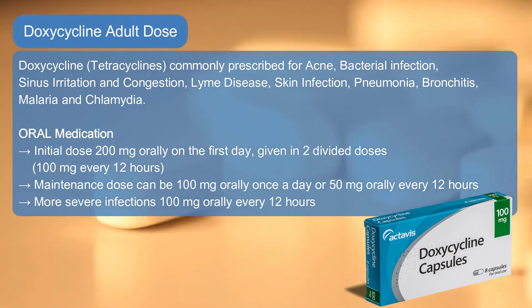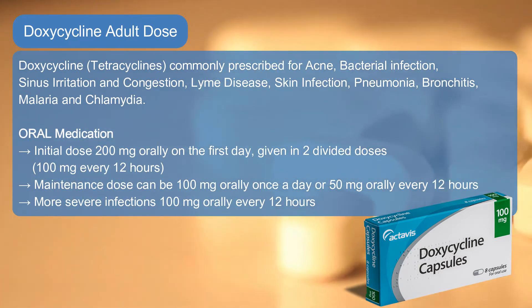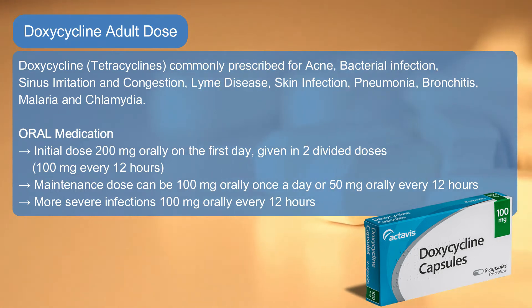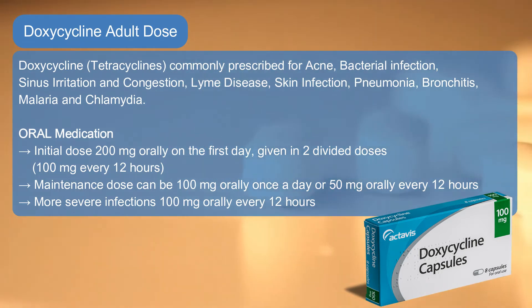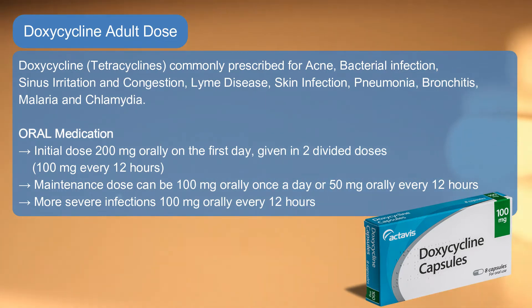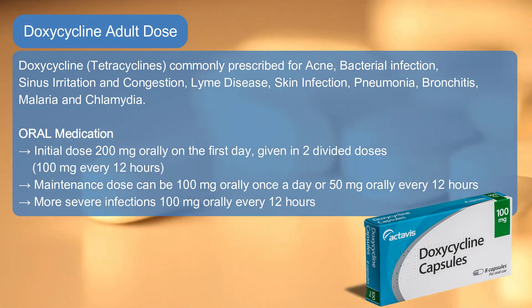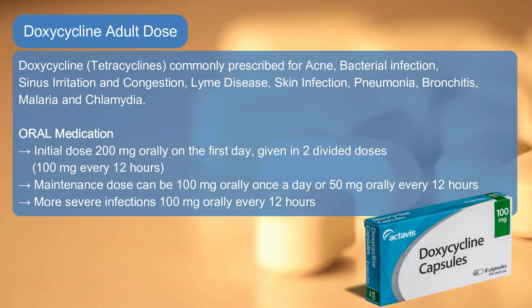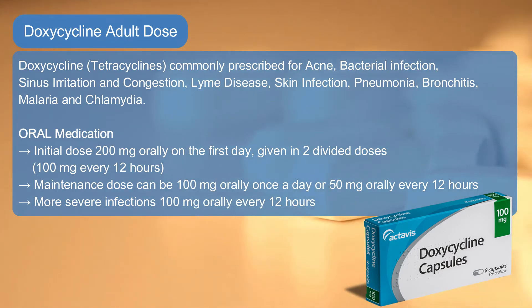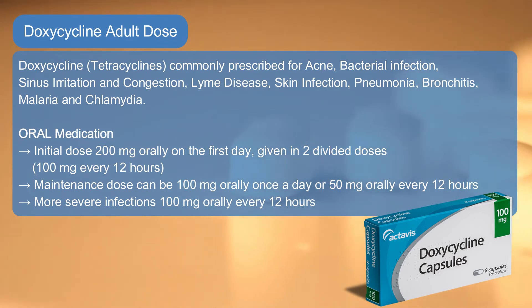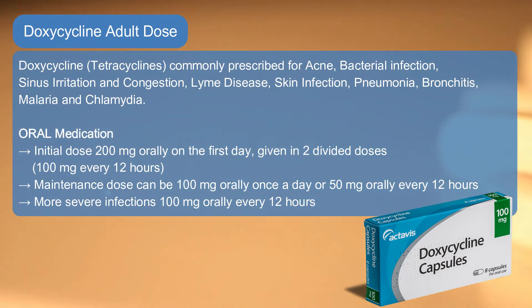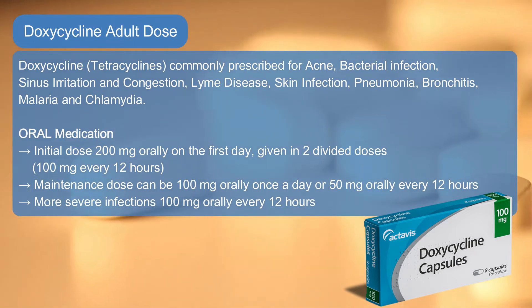Common Doxycycline adult dose — Oral medication: Initial dose 200 mg orally on the first day, given in 2 divided doses of 100 mg every 12 hours. Maintenance dose can be 100 mg orally once a day, or 50 mg orally every 12 hours. For more severe infections: 100 mg orally every 12 hours.